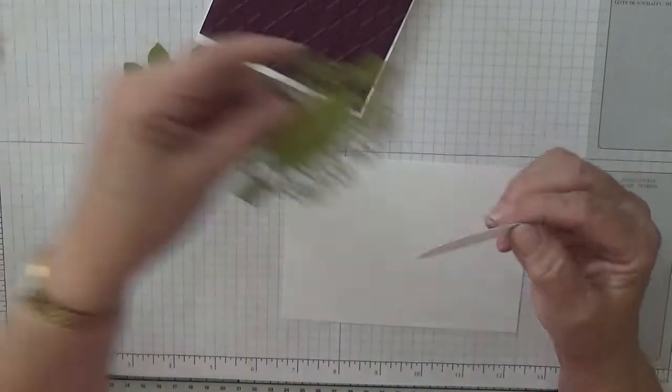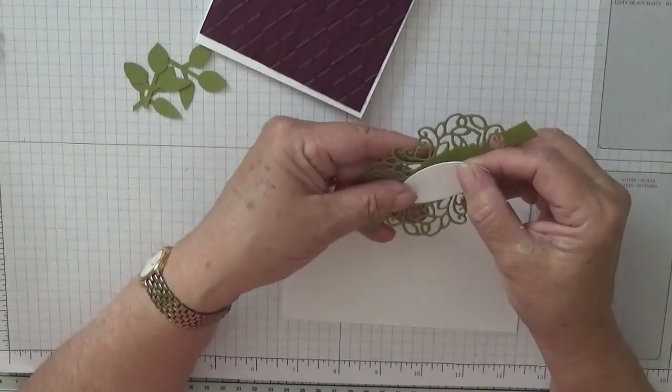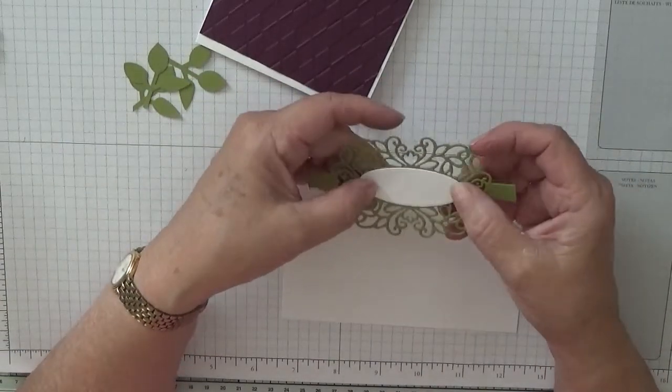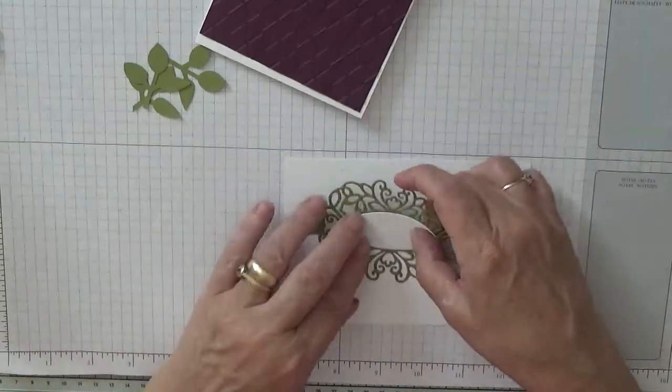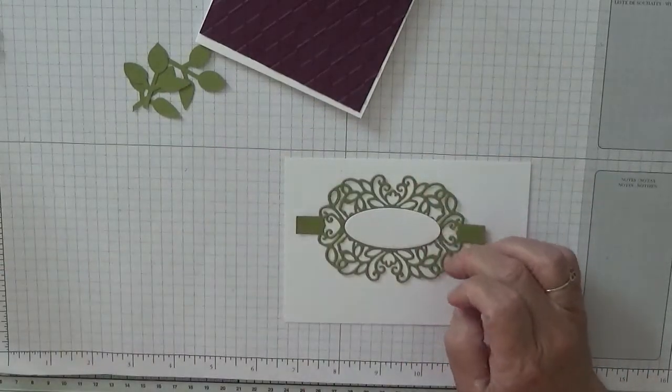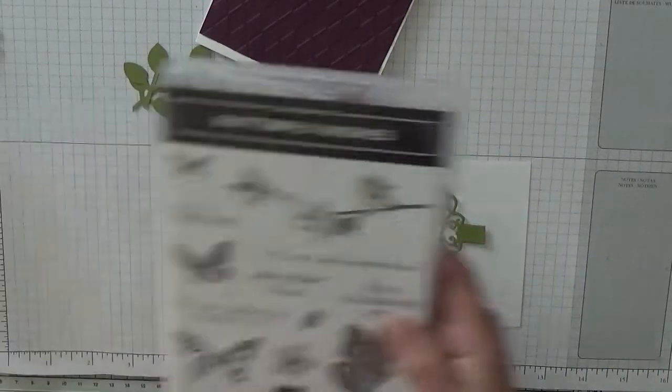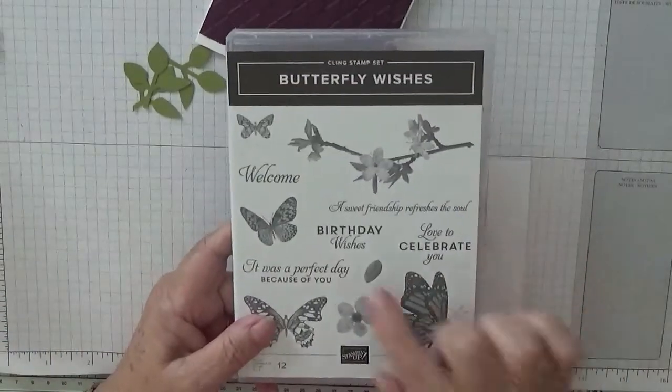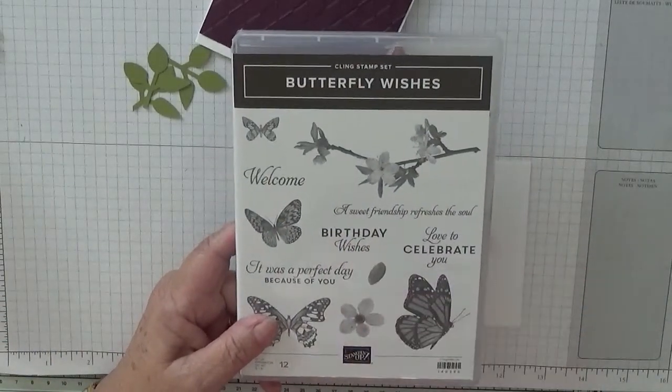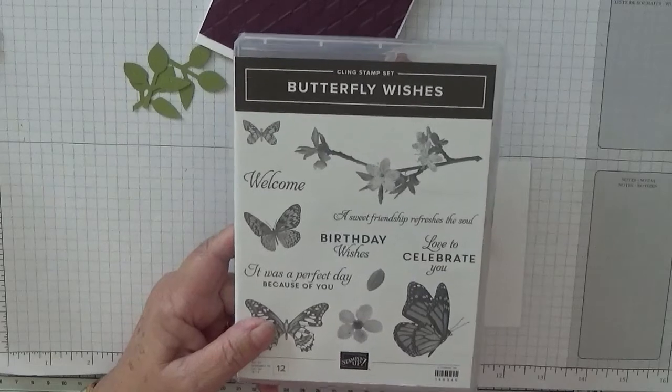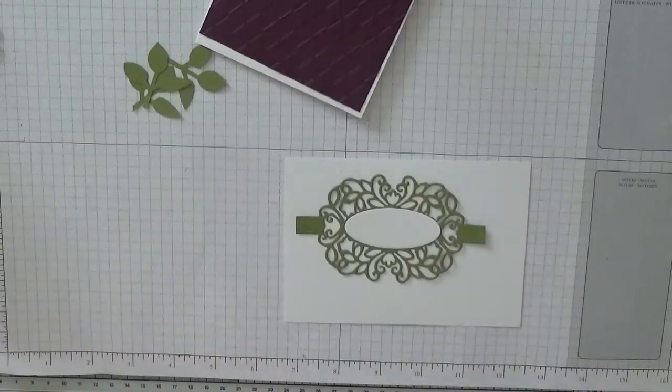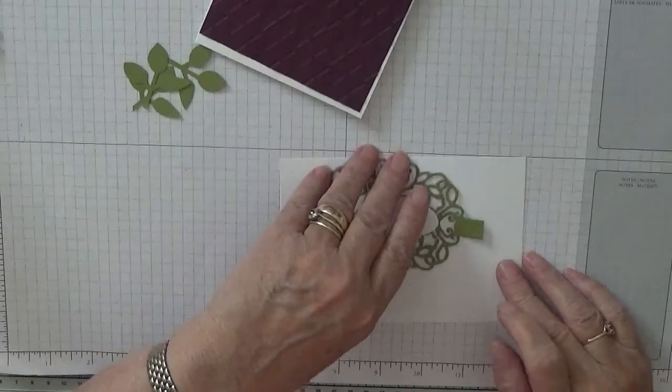And I've also cut an oval which is in with these dies to go in there. To stamp, I am going to stamp Birthday Wishes from Butterfly Wishes, and I'm going to stamp Birthday Wishes in there.